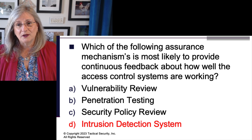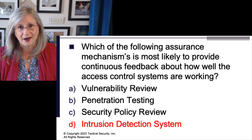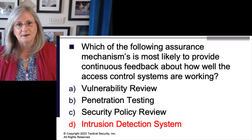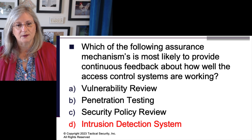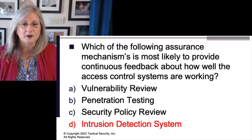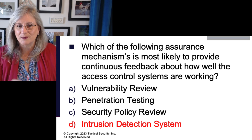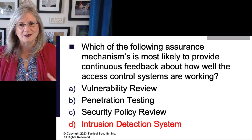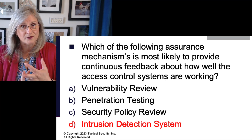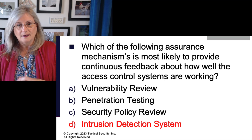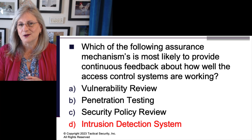Is it the best feedback we could use? Is it the most information we could get if we're worried about how well our access control systems are working? Maybe not. But the question asks for continuous feedback, and the only thing here that's continuous is D. You have to answer the question with the possible answers given. You can't go looking for logs or vulnerability assessments — all that stuff is good to do, but the question is continuous feedback. You must find the critical words in the question.